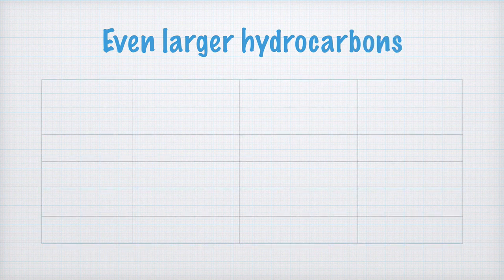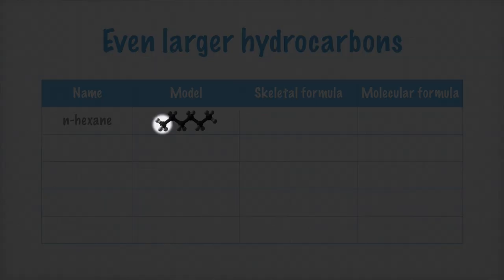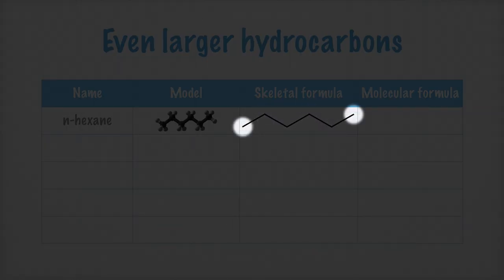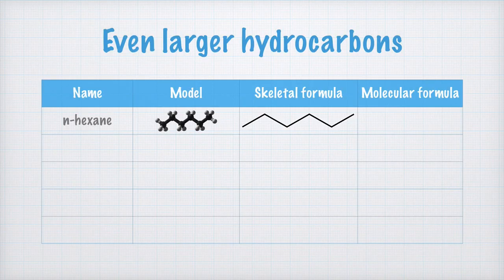When the hydrocarbons grow even larger, we need to simplify even more. This time we write name, model, skeleton formula, and molecular formula in the table head. In Greek, hexa means six, so here comes N-hexane with six carbon atoms. Let's draw a skeletal formula for hexane. In a skeletal formula, each covalent bond is drawn with a line. It means that in each corner, and at each end of the molecule, there are carbon atoms, and everywhere where there's room, it's understood that there are hydrogen atoms. In a hexane molecule there are six carbon atoms and 14 hydrogen atoms, so the molecular formula becomes C6H14.